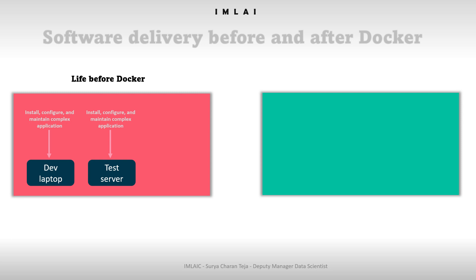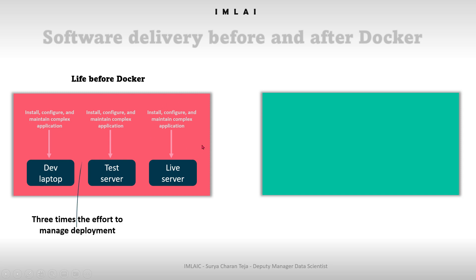Now it's time to move to the production or live server. Again you have to provision the server or instantiate an instance, configure it, deploy the application, and run the services inside — for example, the httpd service must be started. So you are repeating the same steps: dev, test, and live server — three times the effort to finally deploy one application, with only slight variations each time.